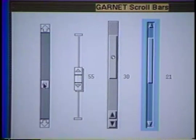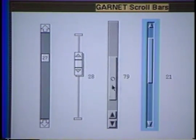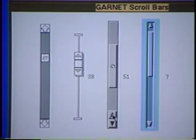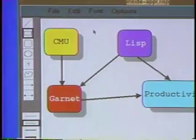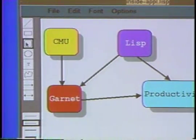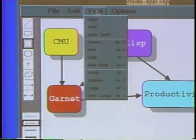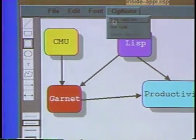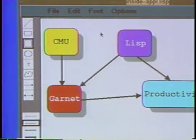The interactors are independent of the particular graphics used. Here, one interactor is used for all four scroll bars. Furthermore, interactors are parameterized so that they are very general, so one kind of interactor is used for buttons, palettes, menus, and even to select objects in a graphics editor.